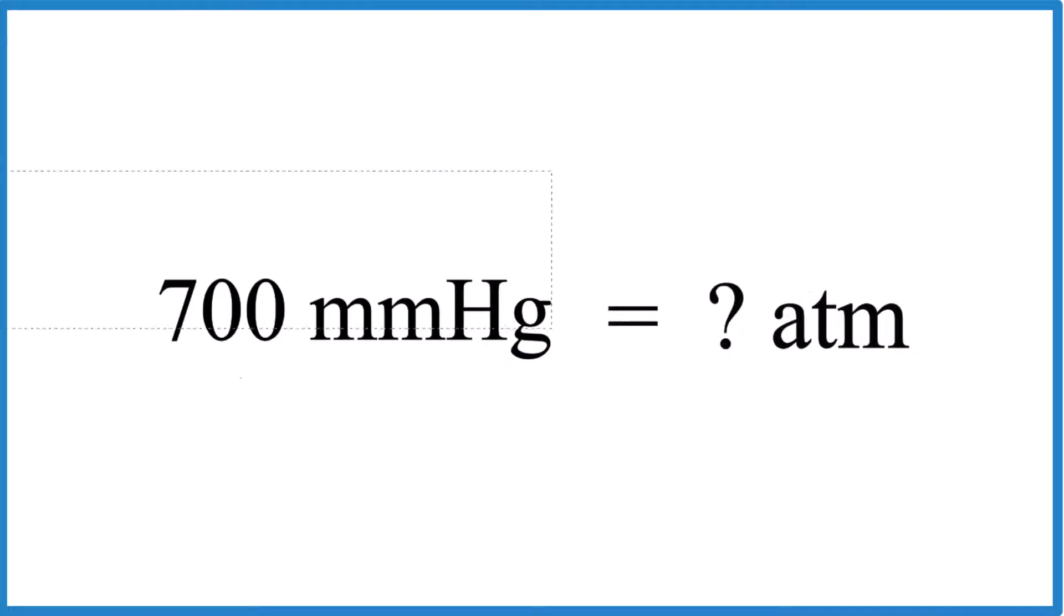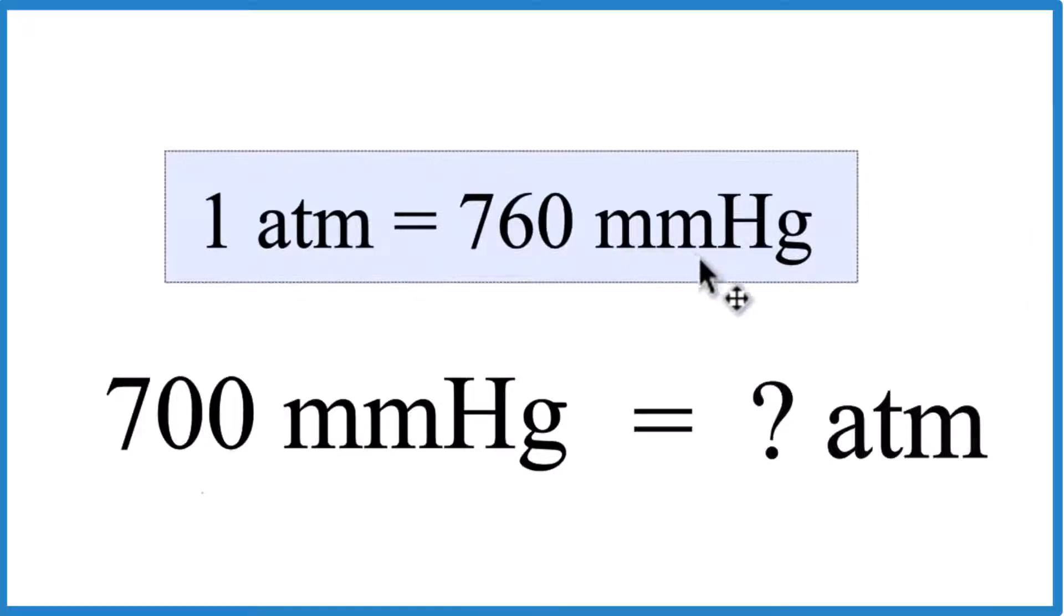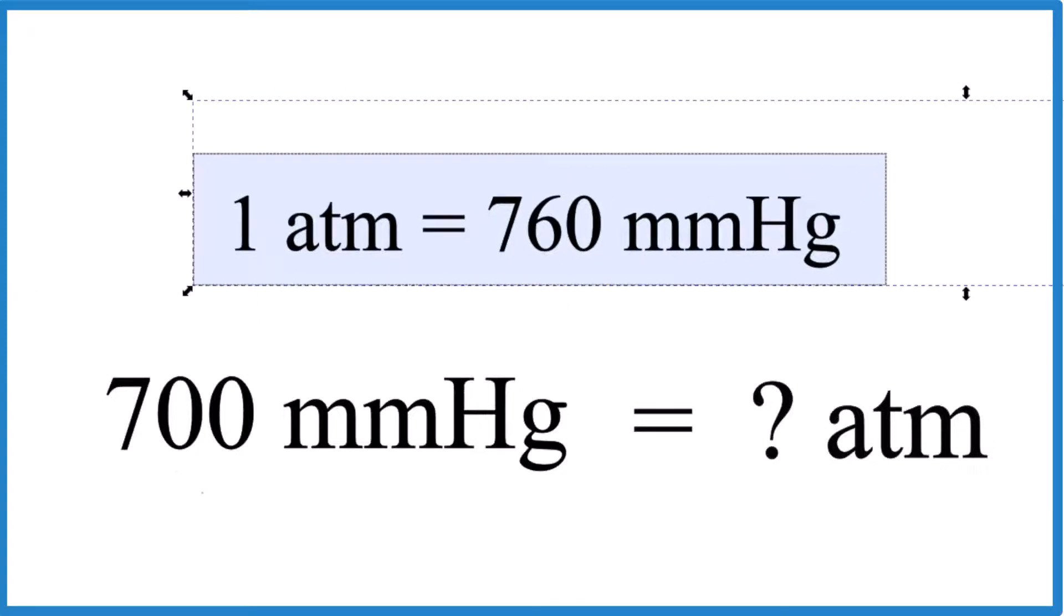What you need to do is memorize that one atmosphere is 760 millimeters of mercury. Or you could look it up. So this is our conversion factor here.